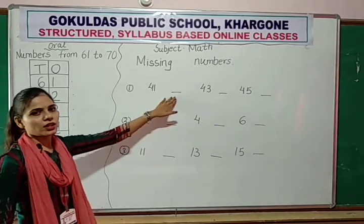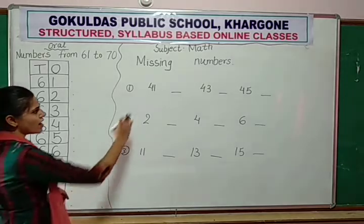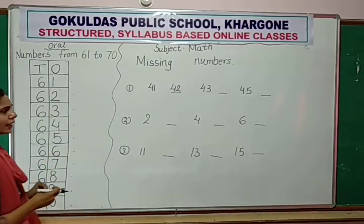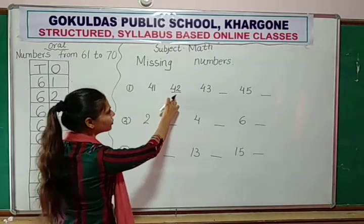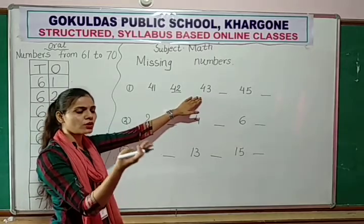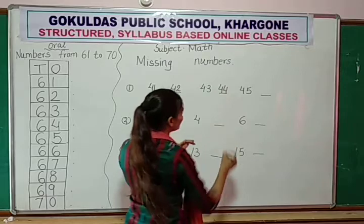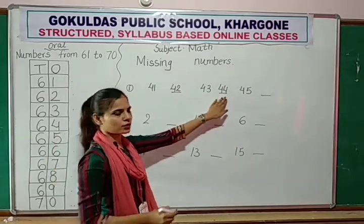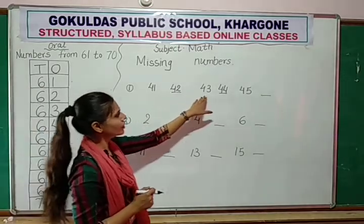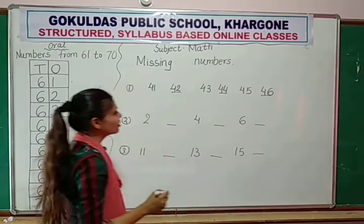Now tell me, after 41, which number will come? After 41, count it. 41, 42. So after 41, 42 will come. So you have to write 42. Now check: 41, 42, 43, 44. So after 43, 44 will come. 41, 42, 43, 44, 45. Now after 45, which number will come? Count: 41, 42, 43, 44, 45, and 46. So you have to write 46.